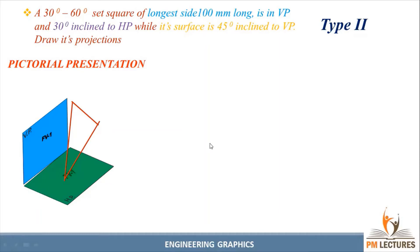First we need to see whether the surface inclination is given or not. Here the surface inclination is given, and it is inclined to VP. If the surface of the plane is inclined to VP, the true shape will be seen in the VP only. So we can see the true shape in the front view only. While drawing in orthographic projection, the drawing will be above the XY plane. The true shape will be projected in the VP, so it will be above the XY plane.